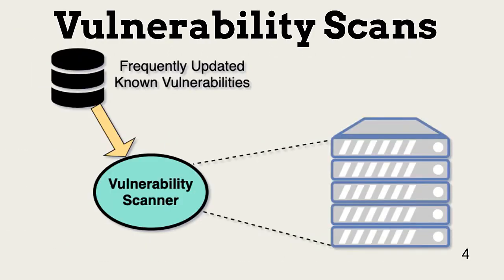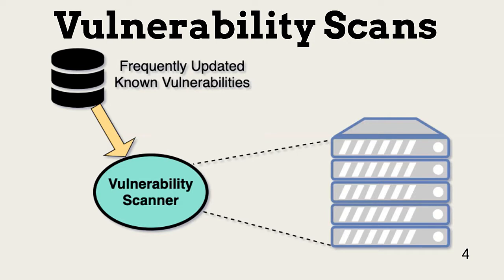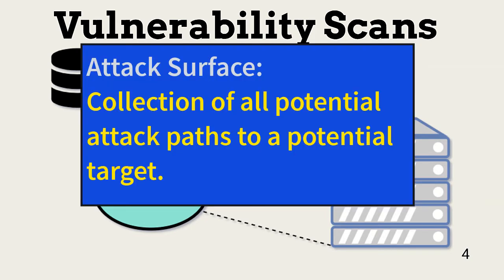Misconfiguration and other types of vulnerabilities are often found during automated vulnerability scans. Solutions like Nessus look for known configurations and architecture vulnerabilities, and they continuously update their known vulnerability signatures. Addressing known configuration vulnerabilities involves reducing the attack surface. An attack surface is the aggregation of opportunities for a threat actor to compromise a system.